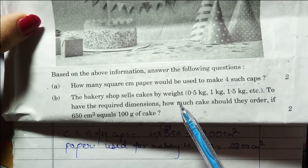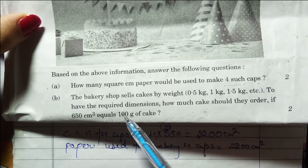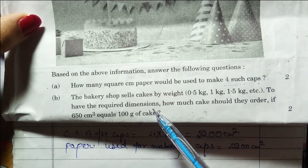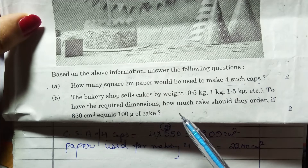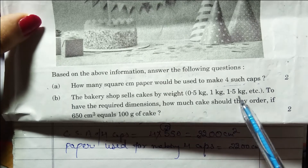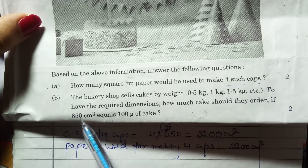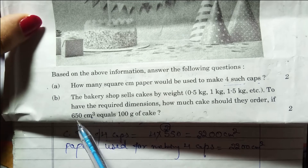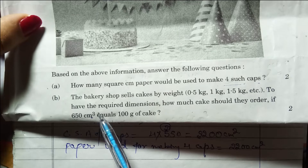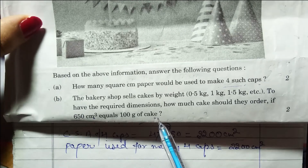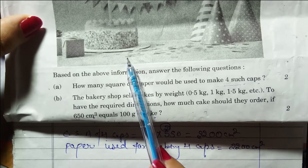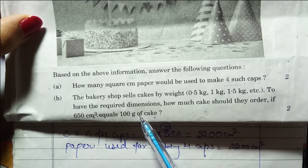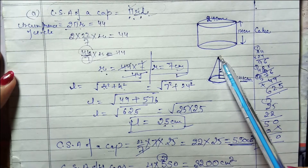Yahan hai hamare paas second question. Itne weight ka jo cake hai, wo shop sale karti hai. To have the required dimensions, how much cake should they order? Jo bhi unhone cake ke dimensions de rakhe hain, unke according humein find out karna hai ki wo inmen se kaun se weight wala cake order karenge. If 650 cm³ = 100 gram of cake, to sabse pahle humein cake ka volume nikalna hoga in cm³, and after that usko convert karenge grams mein.